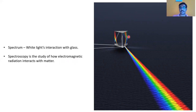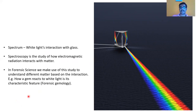That is what spectroscopy studies, and we're going to use it to our advantage. A spectrum is basically white light's interaction with glass. Spectroscopy is the study of how different electromagnetic radiations can interact with matter and what kinds of effects they produce. Based on that, we're going to use it to identify or study something in forensic science.